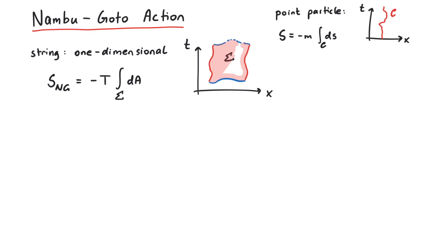We describe the world sheet with two variables, sigma and tau. Sigma can only take on values between zero and L, where L is the length of the string. It tells us where exactly on the string we are. And tau can have values between tau_i and tau_f, representing the initial and final times of the propagation.